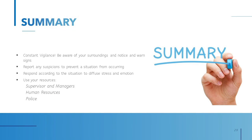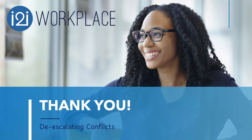In summary: practice constant vigilance. Be aware of your surroundings and notice what's going on — watch the warning signs. Remember to report any suspicions to prevent a situation from occurring in the first place, but respond according to the situation to diffuse stress and lower emotion. As emotion rises, logic will decrease, so keep that in balance. Remember to use your resources — supervisor, managers, human resources, and the police. Thank you for participating. This has been a presentation of Eye to Eye Workplace on de-escalating conflicts, resolving problems, and diffusing tense situations.